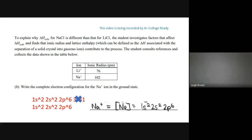If a student used noble gas notation and put [Ne], that's fine as long as they also wrote 1s² 2s² 2p⁶ — they'd get full credit. However, [Ne] alone would never receive credit. Also, if the question says 'complete electron configuration,' you must start with 1s. If it just says 'electron configuration,' the noble gas shorthand would be accepted.